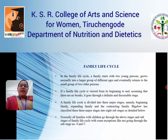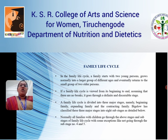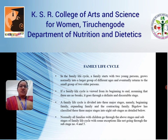In a family life cycle, a family starts with two younger persons, grows normally into a large group of different ages, and eventually returns to a small group of two older persons. If a family cycle is viewed from its beginning to the end, assuming that there is no break, it goes through defined and discriminable stages.